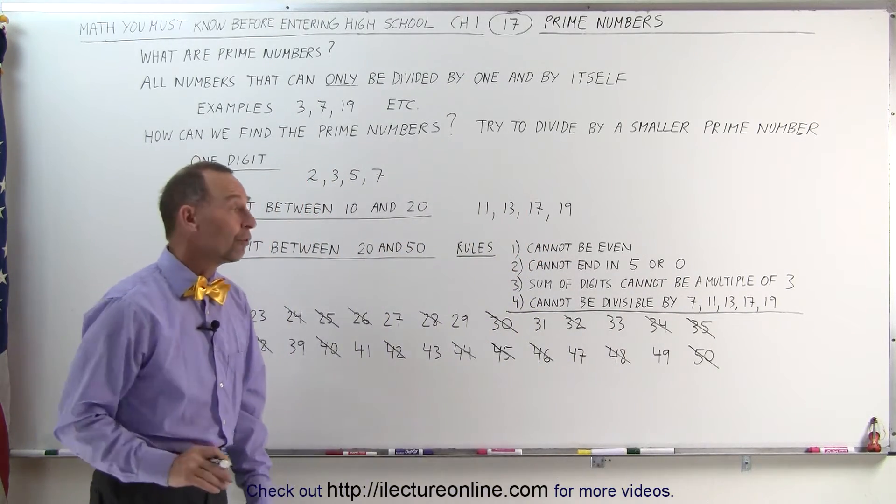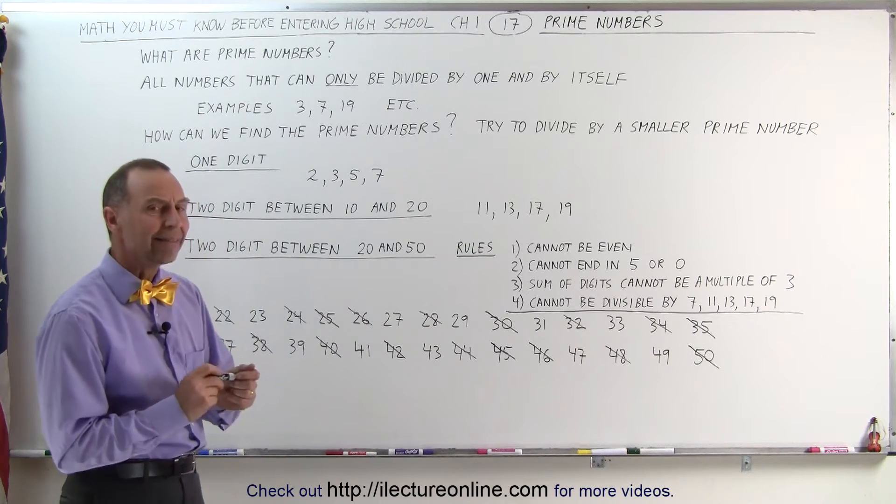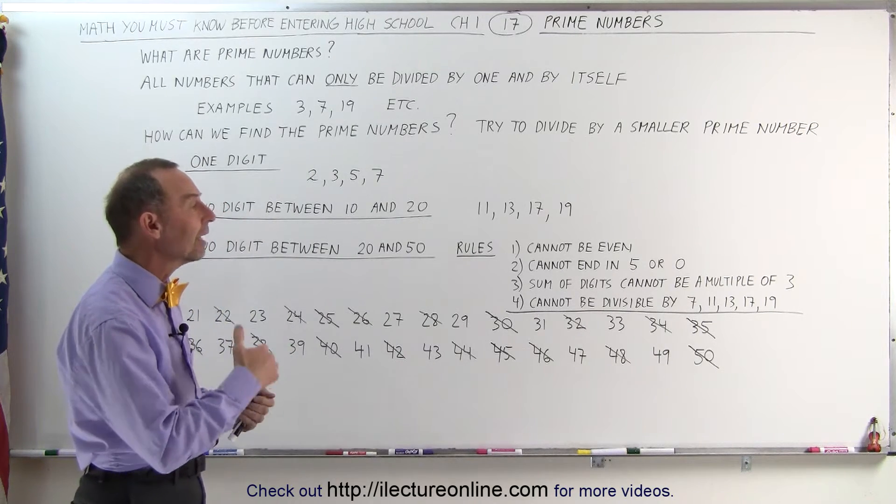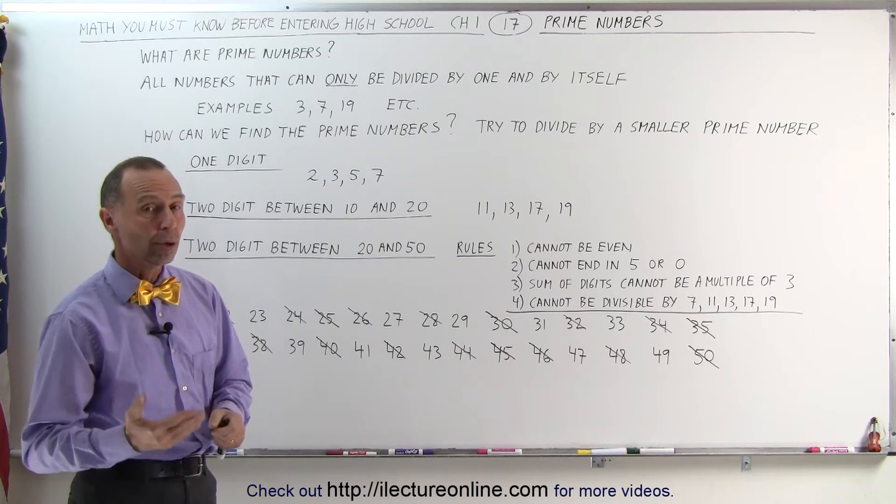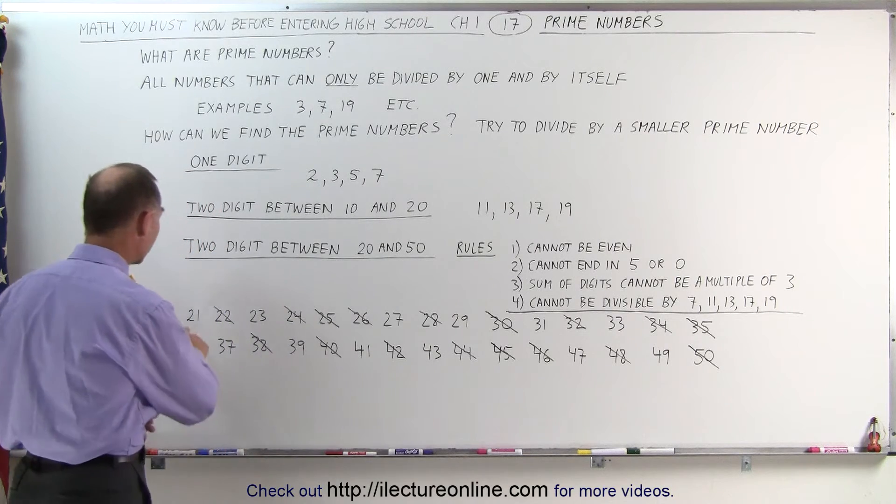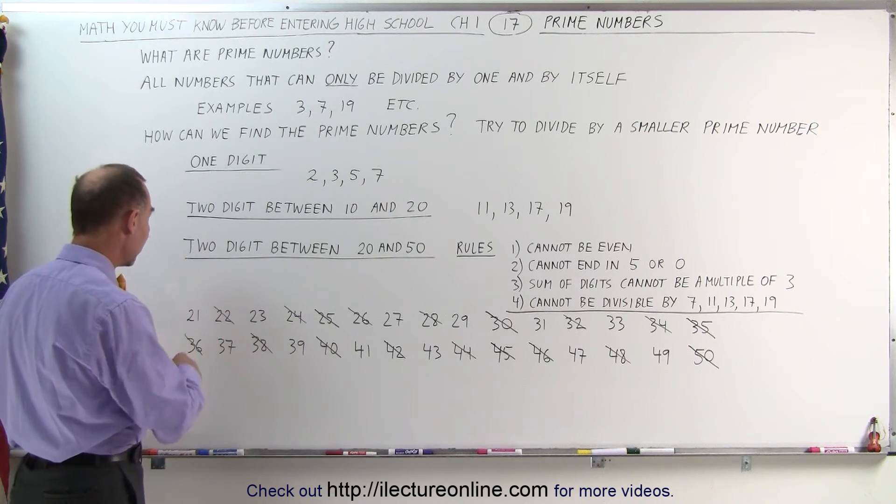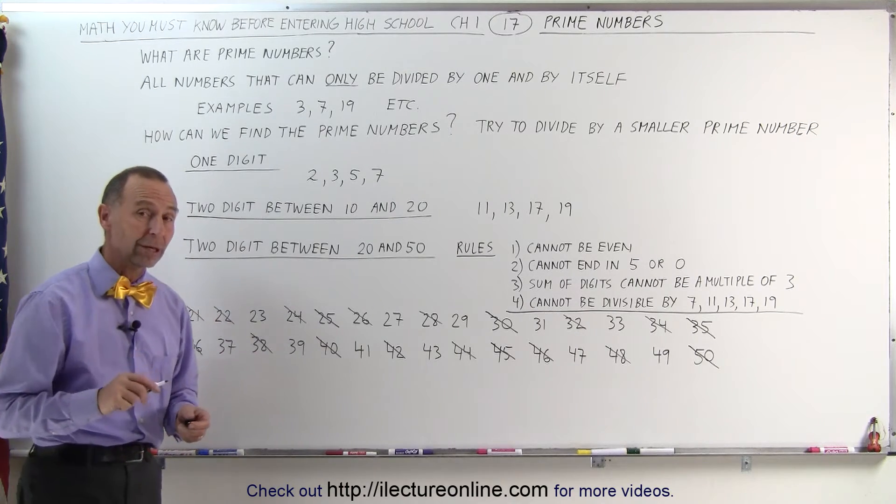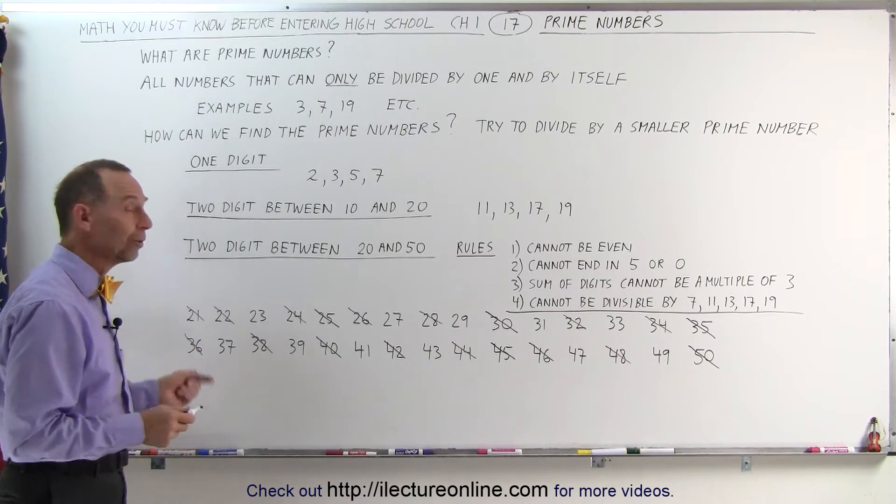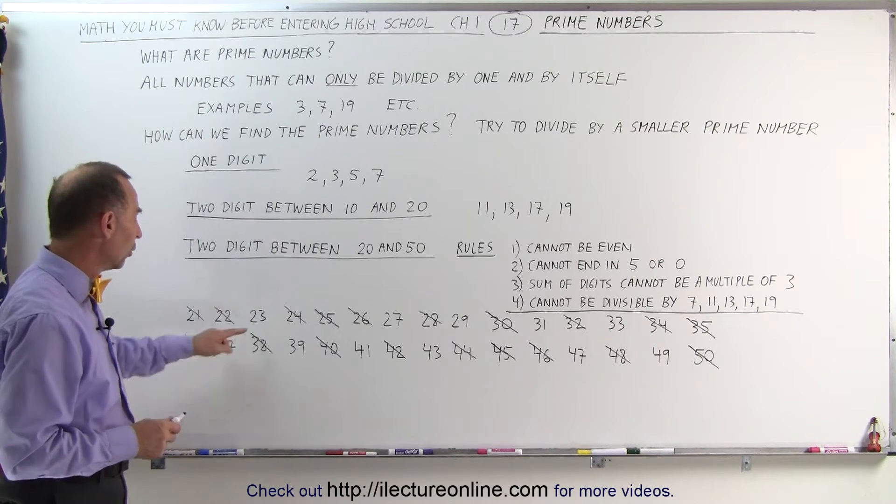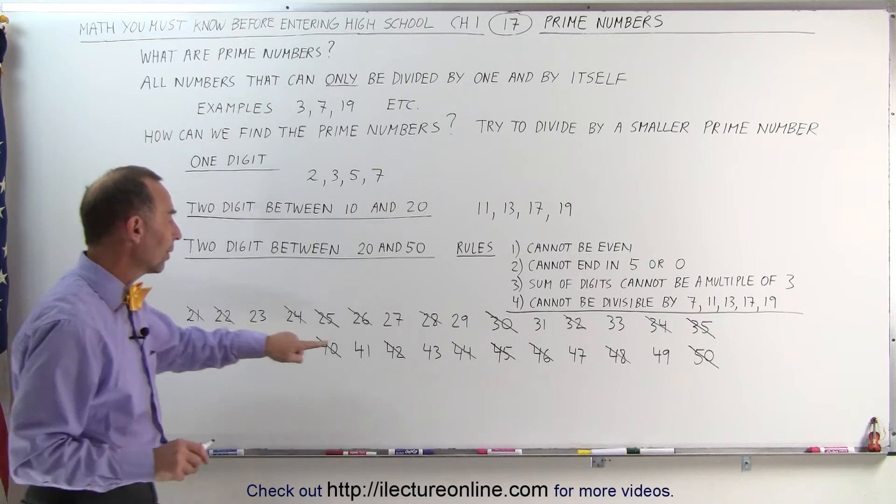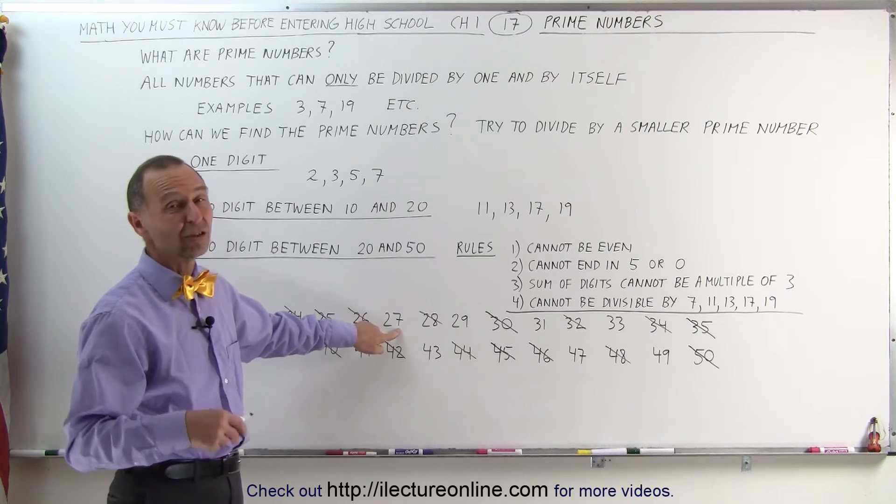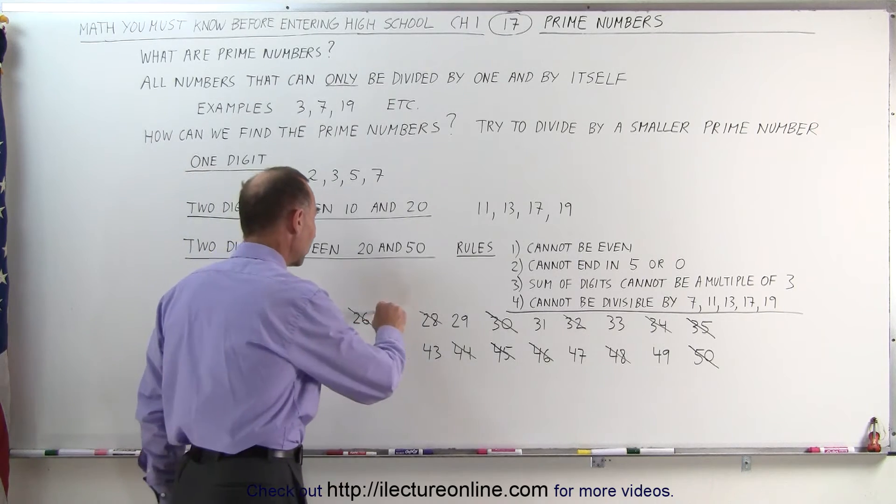So with the numbers that are left over, let's go to the next rule. Let's add up the digits and see if they add up to either a 3 or a multiple of 3. For example, 2 plus 1 is 3. That means that it's not a prime number because when the digits add up to a 3 or a multiple of 3, the number is divisible by 3. 2 plus 3 is 5, so we can't get rid of that. 2 plus 7 is 9, which is a multiple of 3, so we can get rid of that number.